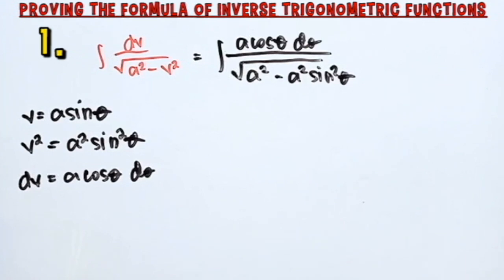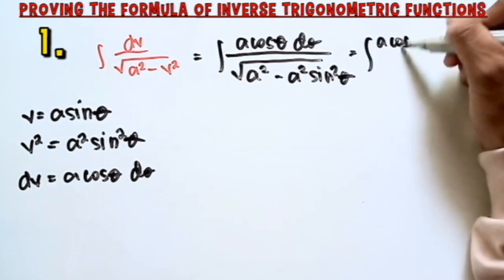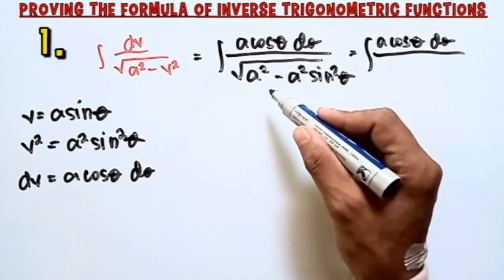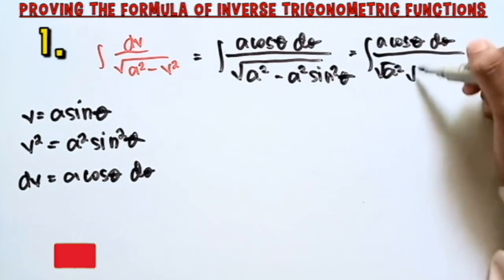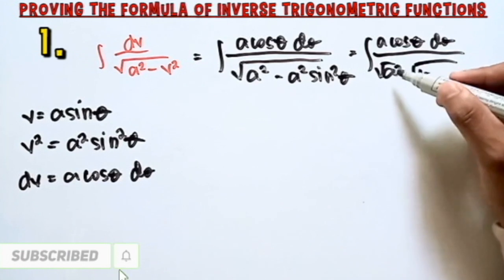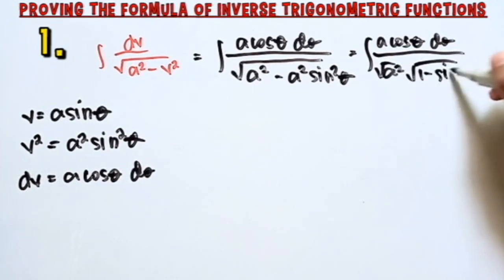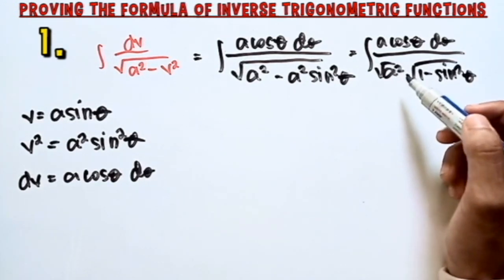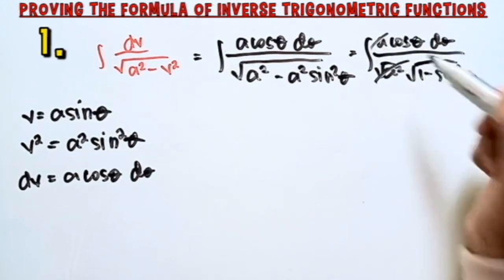We can simplify this into the integral of a cosθ dθ over the square root of a² times (1 minus sin²θ). Factoring out a², this becomes the square root of a² multiplied by the square root of (1 minus sin²θ). Notice that the square root of a² equals a, so the a in the numerator and denominator will cancel.